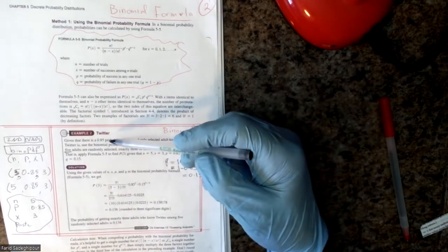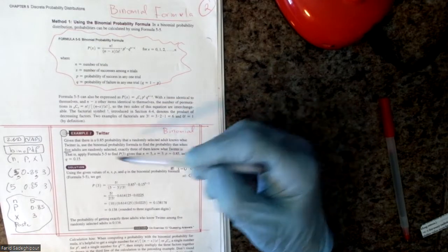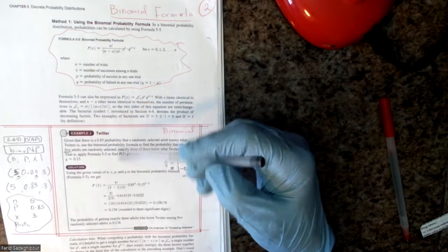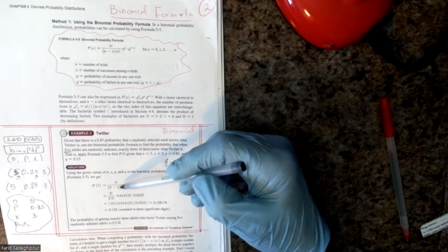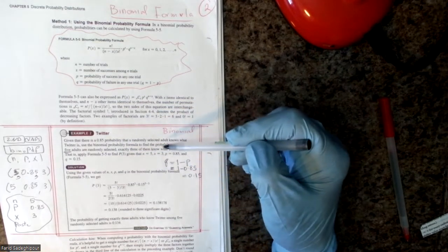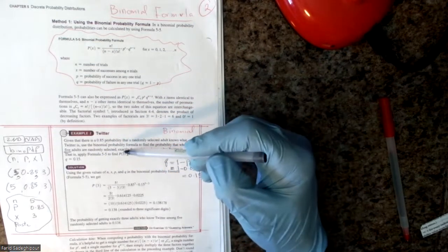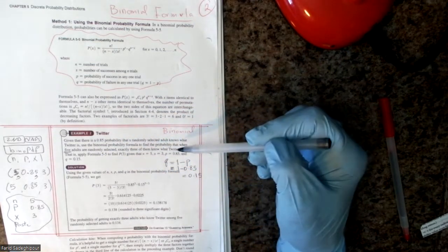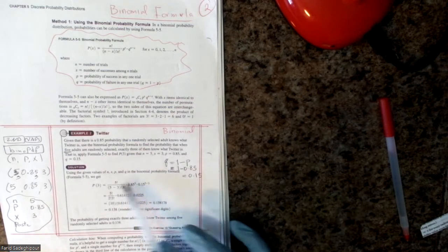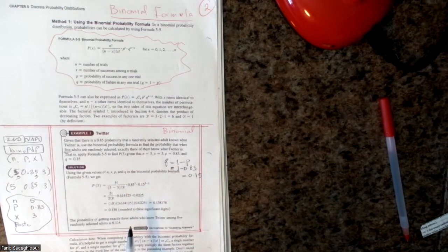Here is an example. There is an 85% probability that a randomly selected adult knows a certain topic — that is your p-value. Use the binomial probability formula to find the probability that when five adults (n equals 5) are randomly selected, exactly three of them (x equals 3) know it. Through this formula you calculate probability of exactly three out of five.